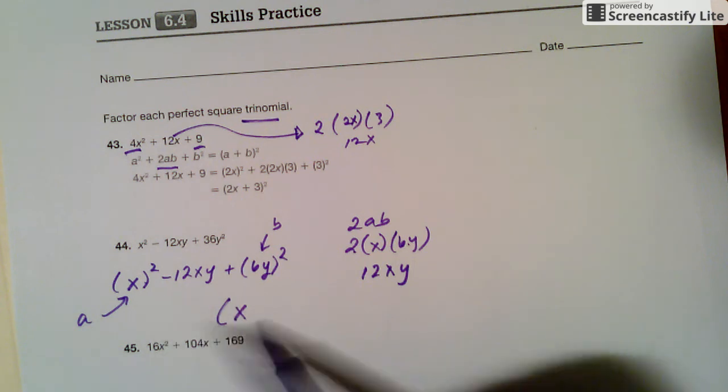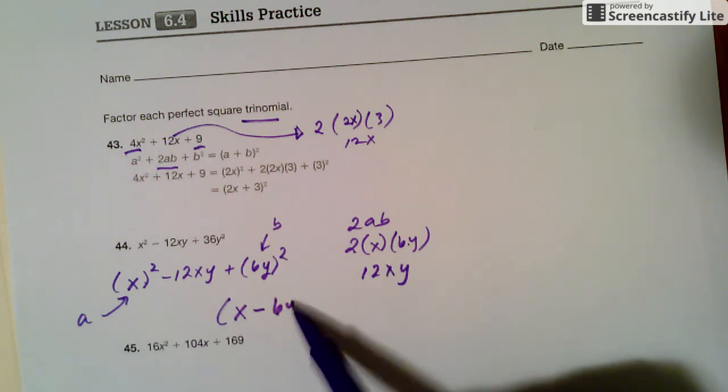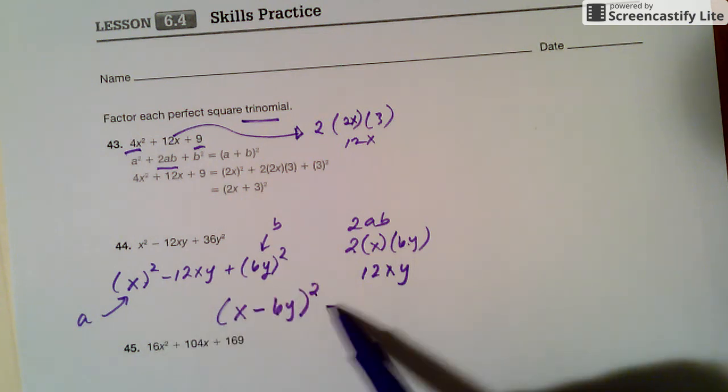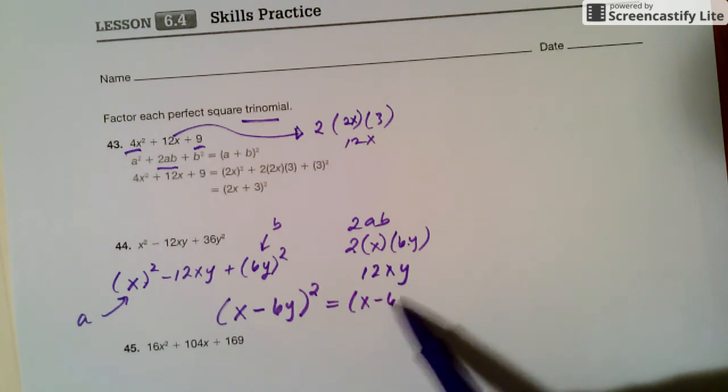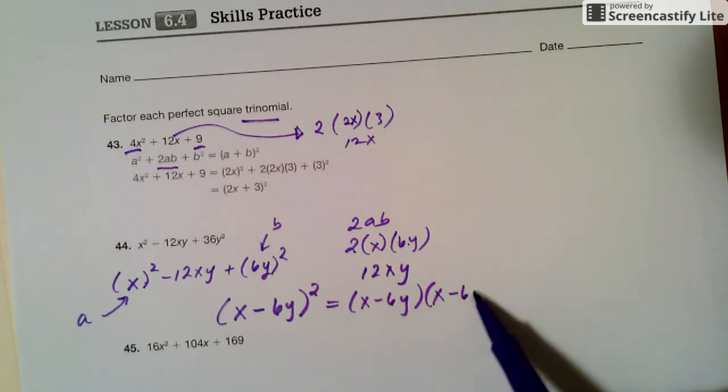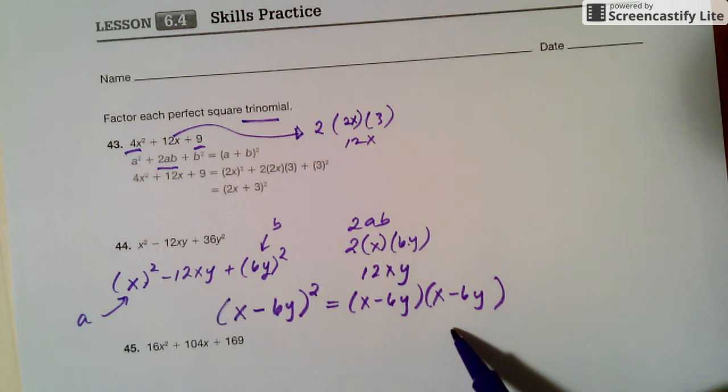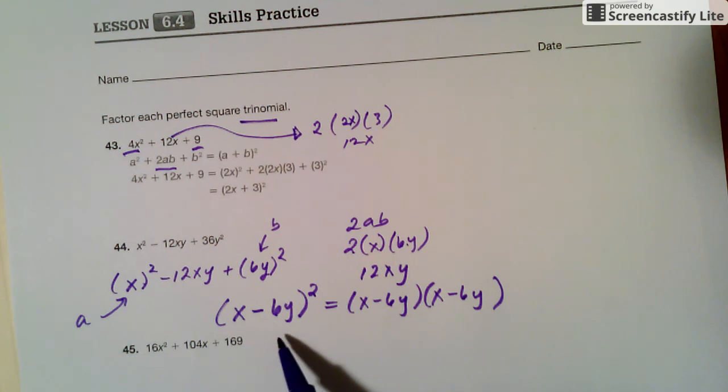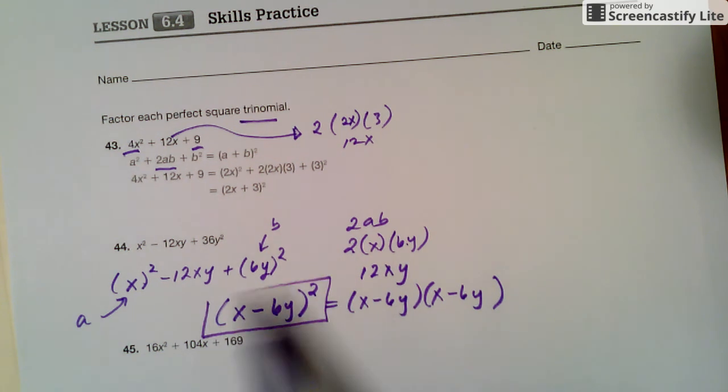So x is the a minus 6y square. And what that means is x minus 6y, x minus 6y. But we'd rather write it just like this because it's a little bit more condensed. So this is your answer. So we can try that for here.